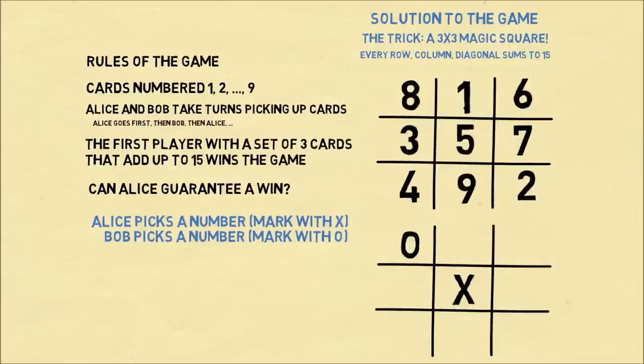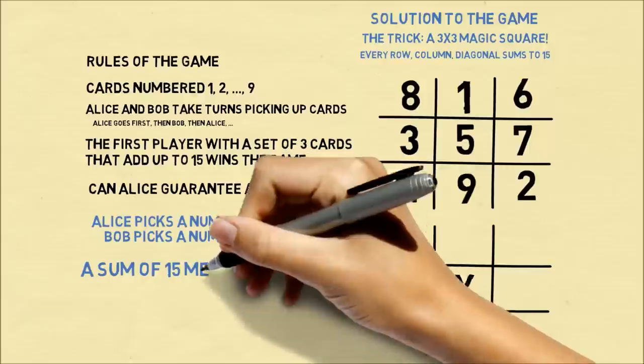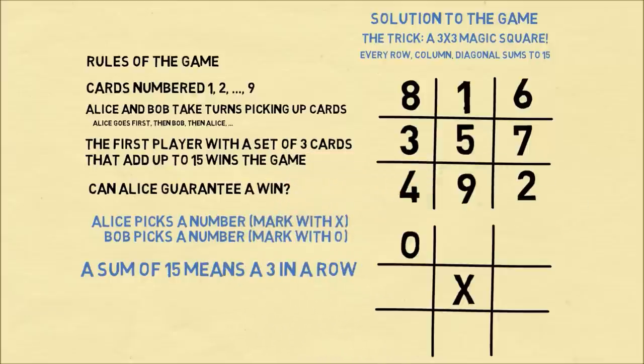Whichever number Bob picks, if he picks an 8, we'll put an O in that square. So having a sum of 15 means getting a 3 in a row. Because the only way to get 15 is to have one of the rows, columns, or diagonal.